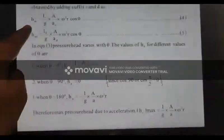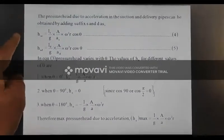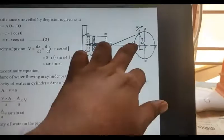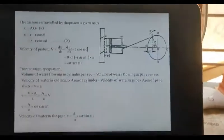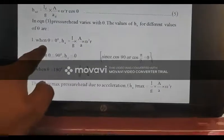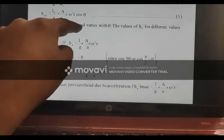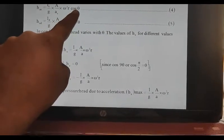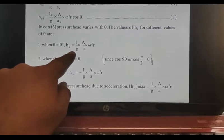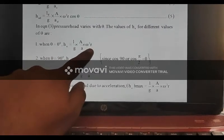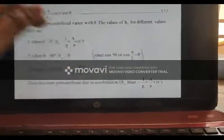These three equations may not be given. Now let's evaluate the pressure. The pressure head is equal to 0 degrees, that is theta equals 0. That equation is h_A is equal to 1 by g, a by A, omega. That is theta 90 degrees — A is equal to 0, cos 90 is equal to 0.